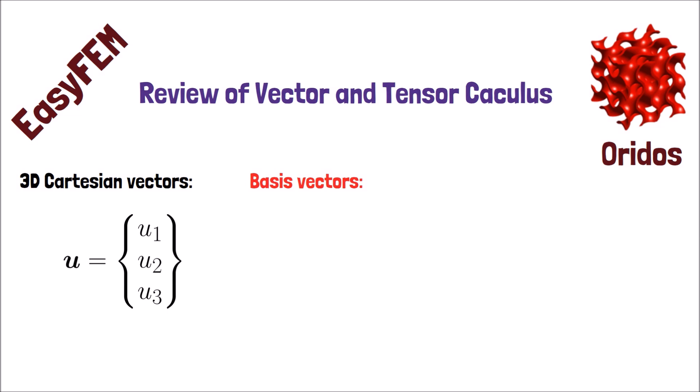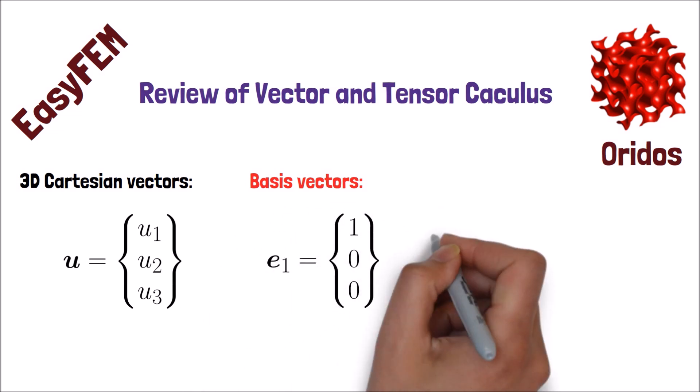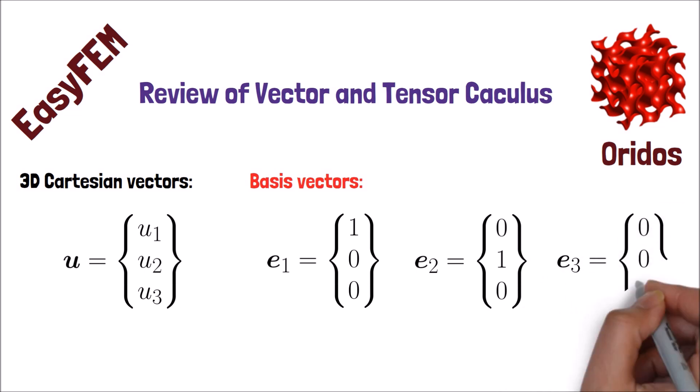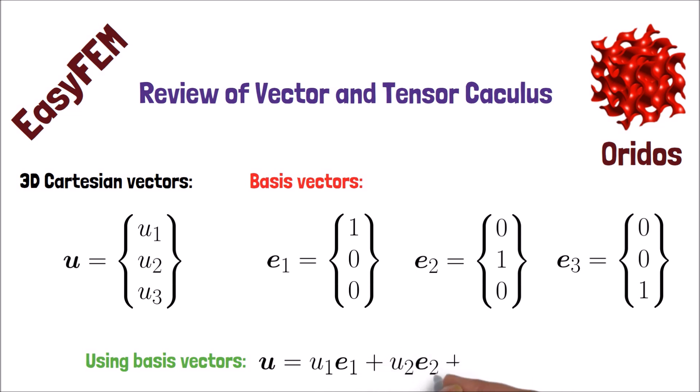For example, for our U vector, we can define three basis vectors, E1, E2, and E3, as follows. Now, we can define the U vector as a linear combination of basis vectors E.